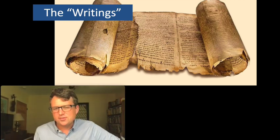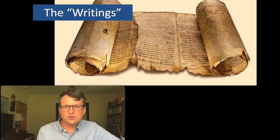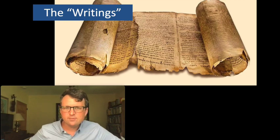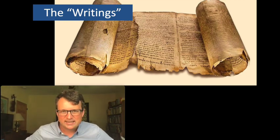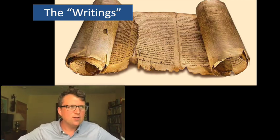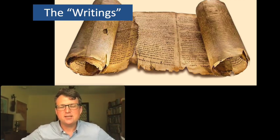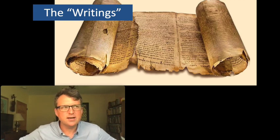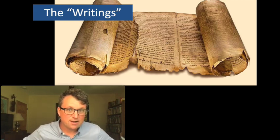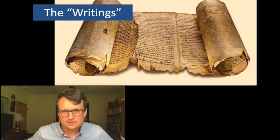These are the two parts of the canon we've talked about so far, and the one final remaining part of the canon is the writings. In the three-part schema of the canon, we've got Torah, the Nevi'im or the prophets, and then this third part, the Ketuvim, or the writings.